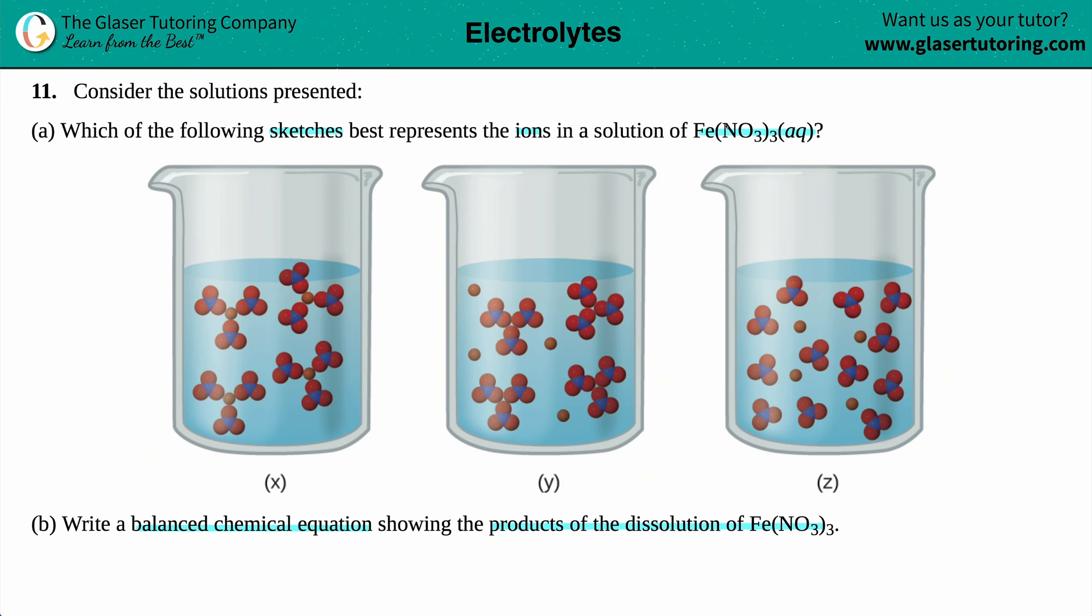Now, they did already tell us that Fe(NO₃)₃ is aqueous. This AQ means that it is aqueous. And aqueous means that you are in water. So by definition, anytime that you see AQ, you know that whatever your compound is has been thrown in with a bunch of water.